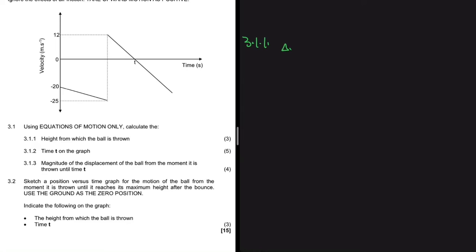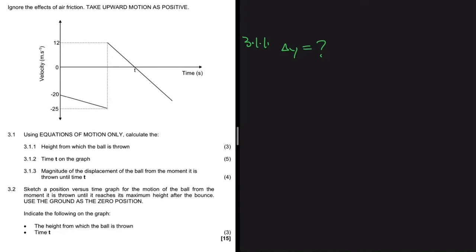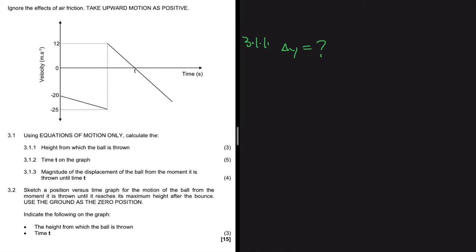We are looking for delta y — the height from which the ball is thrown. Problem solving 101: we look at the information we have and use it to find what we don't have. At t=0, the velocity at which the ball is thrown is our vi, which is minus 20 m/s. When the ball hits the ground it has a velocity of minus 25 m/s, so our vf is minus 25 m/s.